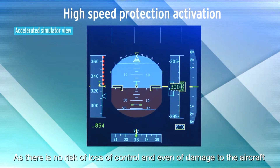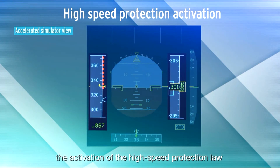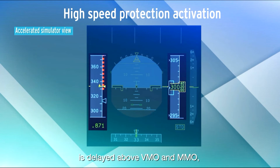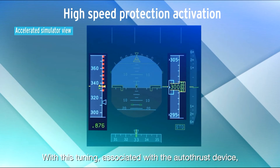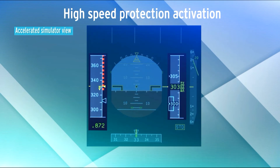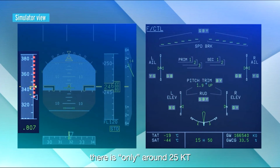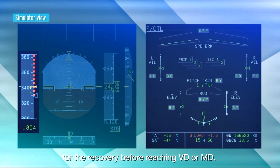As there is no risk of loss of control and even of damage to the aircraft when slightly exceeding VMO or MMO, the activation of the high-speed protection law is delayed above VMO and MMO by around 10 knots. With this tuning associated with the autothrust device, only very strong gusts can activate the hard protection. As the protection is not activated immediately when exceeding VMO-MMO, there is only around 25 knots for recovery before reaching VD or MD.